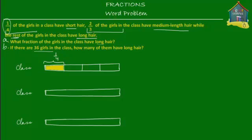Now let's mark two thirds using the second model. If the class is divided into three equal parts, then two out of those three parts is the fraction two thirds. So two thirds would be these two pink blocks, and two thirds of the class has got medium length hair.